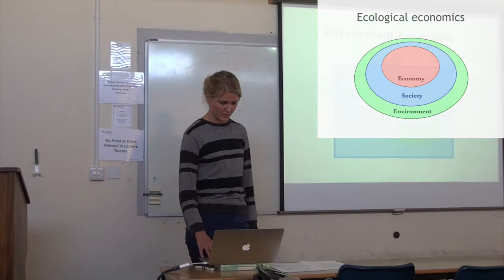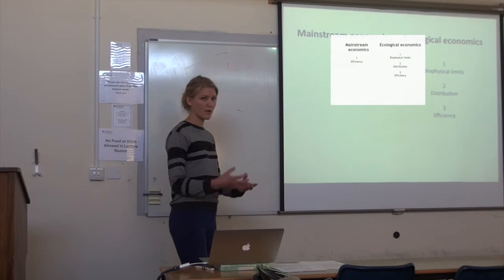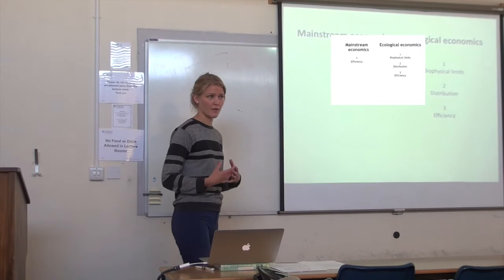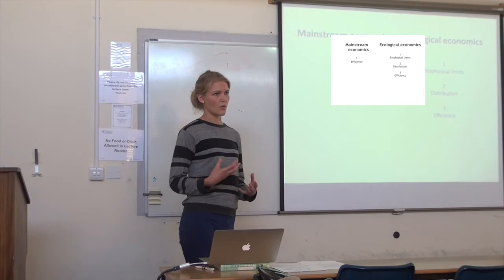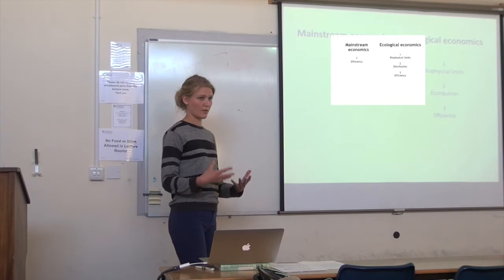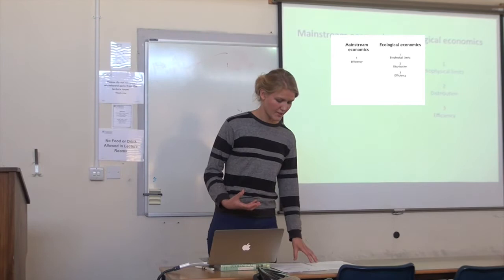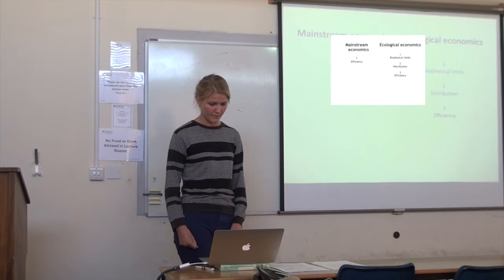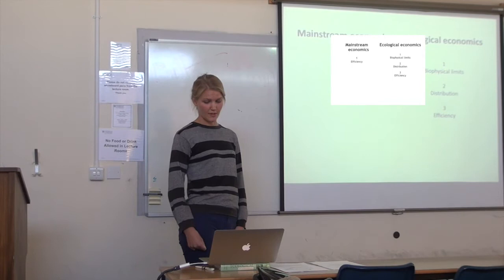In other words, mainstream economics has one main criteria, which is efficiency. Ecological economics has three criteria, where efficiency comes only after the first two are met. The first being living within biophysical limits, and the second one making sure that distributional fairness is met. I'm going to focus — since I only have so much time — on the first point, which is the biophysical limits.